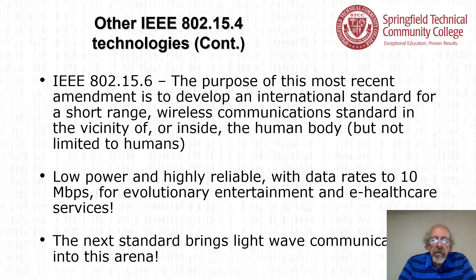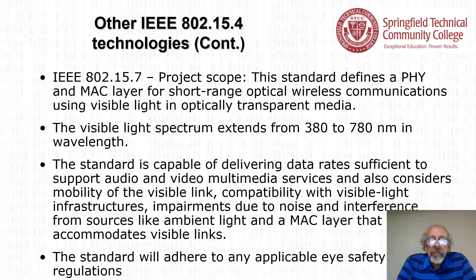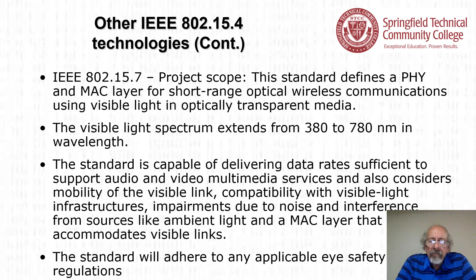The 802.15.7 standard defines a physical and MAC layer for short-range optical wireless communications using visible light and optically transparent media — that is, using visible light in free space. The visible light spectrum extends from 380 to 780 nanometers in wavelength. The standard is capable of delivering data rates sufficient to support audio and video multimedia services, considers mobility of the visible link, compatibility with visible light infrastructures, impairments from ambient light noise and interference, and a MAC layer that accommodates visible links. The standard will adhere to any applicable eye safety regulations.